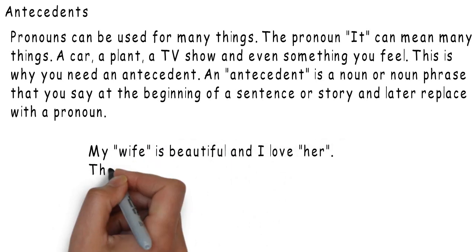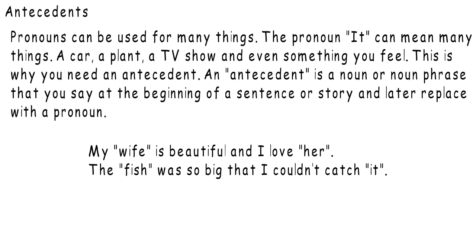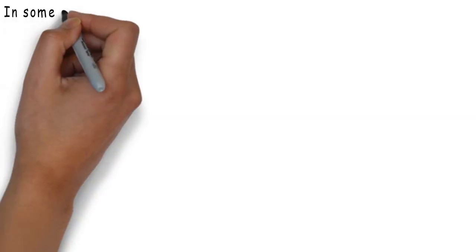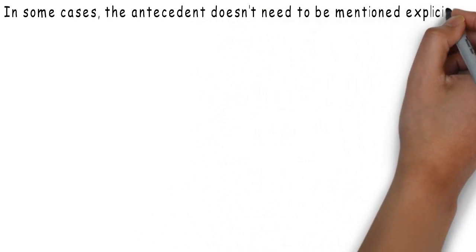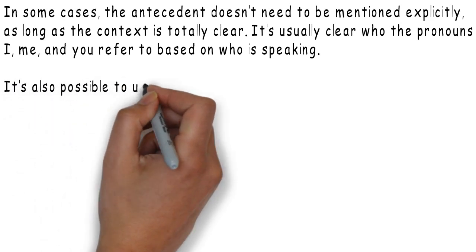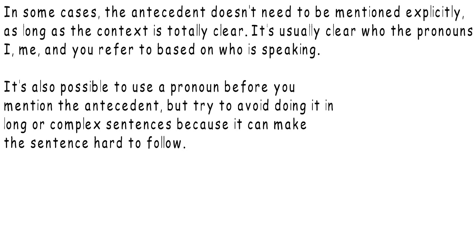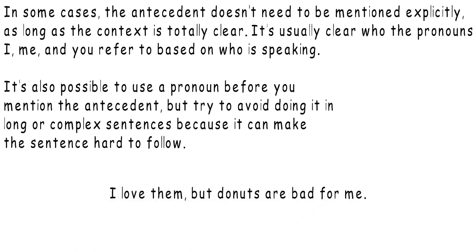My wife is beautiful and I love her. The fish was so big that I couldn't catch it. In some cases, the antecedent doesn't need to be mentioned explicitly, as long as the context is totally clear. It's usually clear who the pronouns I, me, and you refer to based on who is speaking. It is also possible to use a pronoun before you mention the antecedent, but try to avoid doing it in long or complex sentences because it can make the sentence hard to follow. For example: I love them, but donuts are bad for me.